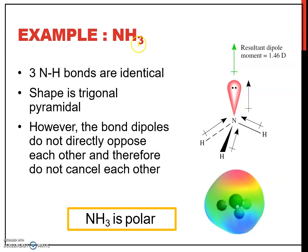For NH₃ ammonia, based on the molecular shape, the geometry is trigonal pyramidal. We look at the electron sharing on the bonding pairs — which atom they are attracted to. Nitrogen is more electronegative compared to hydrogen, so the arrow of the dipole points towards nitrogen.